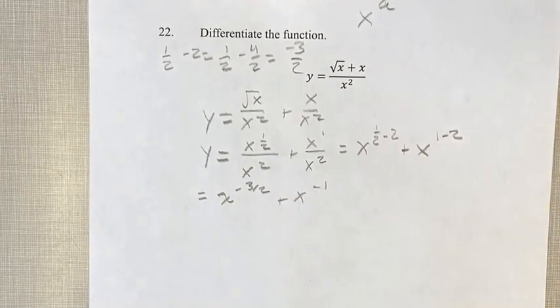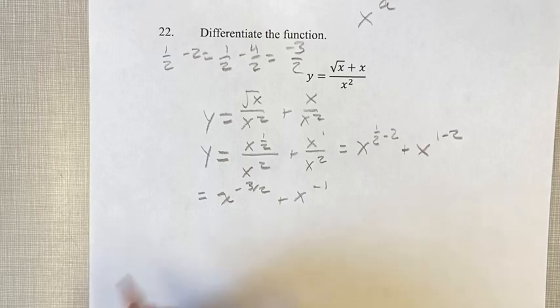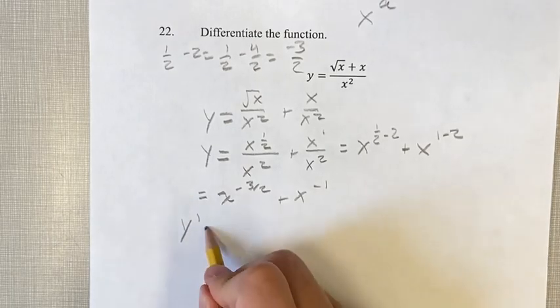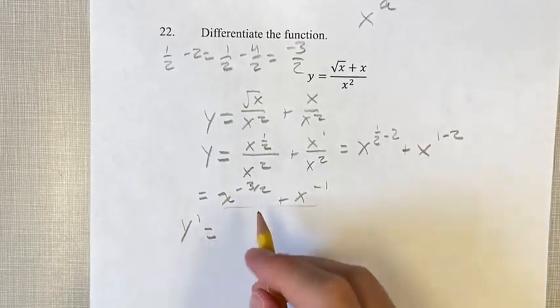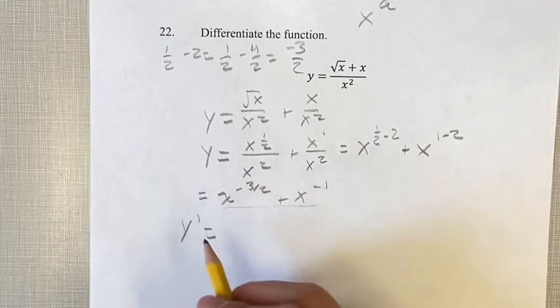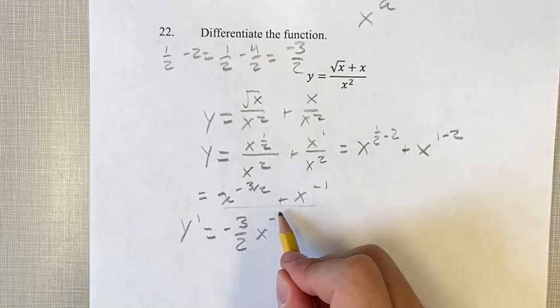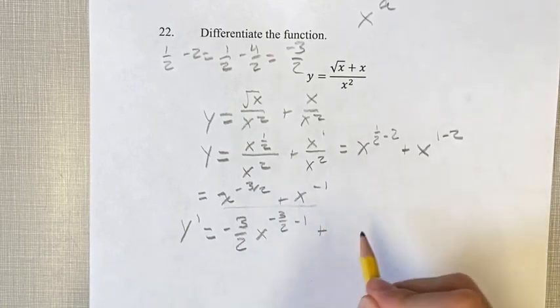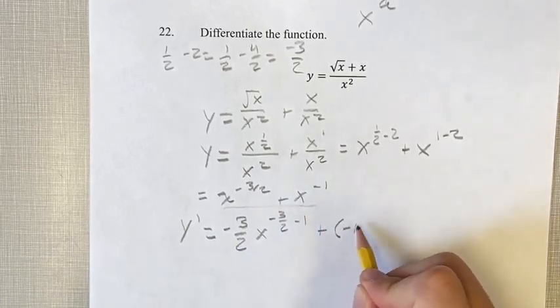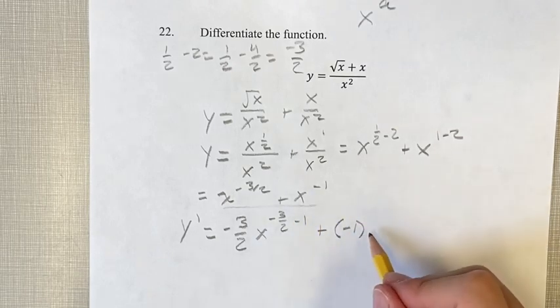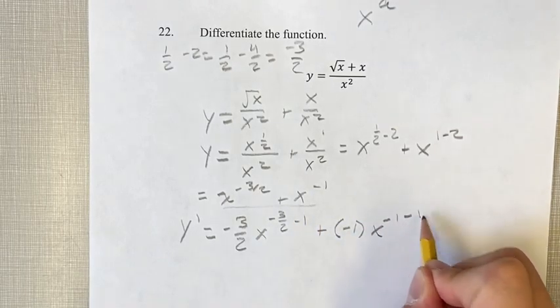Now this is two power functions. We can find the derivative of these easily. So y prime equals... bring the exponent down, negative three-halves. New exponent to subtract one: minus three-halves minus one. Plus, bring the exponent down, negative one. New exponent, negative one, subtract one.